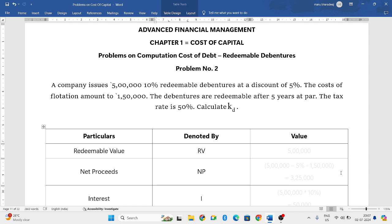A company issues 5,00,000 10% redeemable debentures at a discount of 5%. The costs of flotation amount to Rs 1,50,000. The debentures are redeemable after 5 years at par. The tax rate is 50%. Calculate KD.